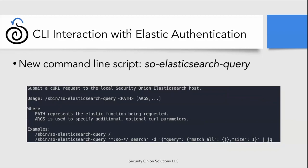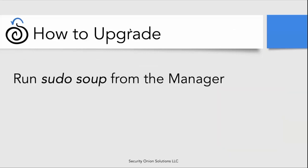That's it for Elastic Authentication. Thank you, Jason, and thank you, Mike — really appreciate you joining us for this video and for all the work you put into Security Onion 2.3.60. Now that you've learned about the great stuff in this latest release, how do you get it? If you've got an existing installation, simply log into your manager and run sudo soup, and it's going to upgrade you to the latest and greatest. Keep in mind all those things that Mike and Jason talked about are covered in our blog post, release notes, and documentation.